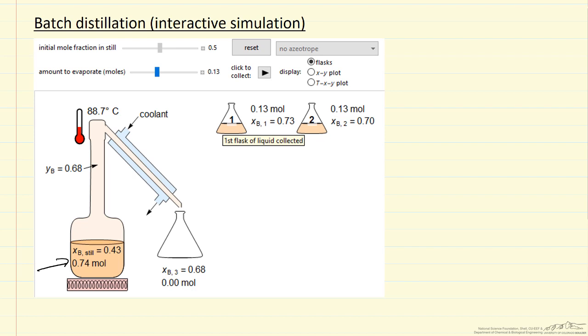Now keep in mind, in a real system, we most likely are going to have a column here, and we're going to get much better separation than I'm showing for this particular case. But I think it helps to visualize by first looking at this simple case.